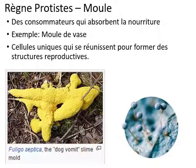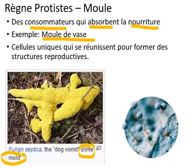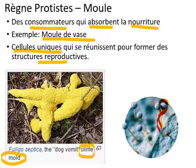Here is the group of protists that act like fungus. They are consumers that absorb their food. For example, in English I call this slime mold. They are made of single cells that come together to form reproductive structures. On a mold, this reproductive structure contains spores that allow the mold to reproduce.